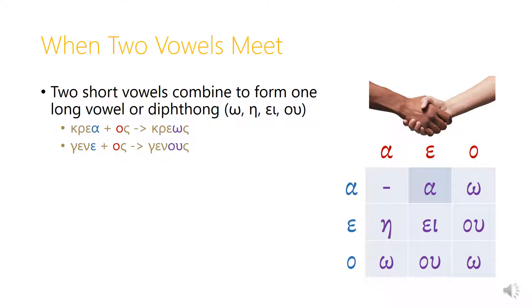Before we look at other types of third declension nouns and their stems, we need to notice that there are patterns in Greek for what happens when two short vowels bump up against one another. We're going to see this with some genitive forms when we add -os onto a real stem that ends in a short vowel. For example, crea is the real stem of creas. When we add -os, the alpha at the end of the stem runs into the short omicron of the -os ending, and those two vowels combine to form one long vowel — omega — so the genitive form of creas is creos.